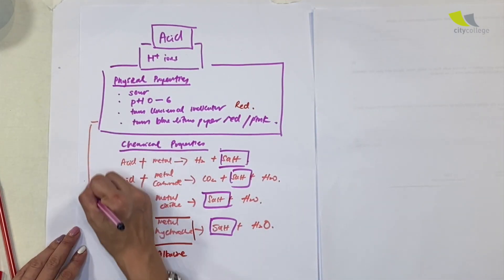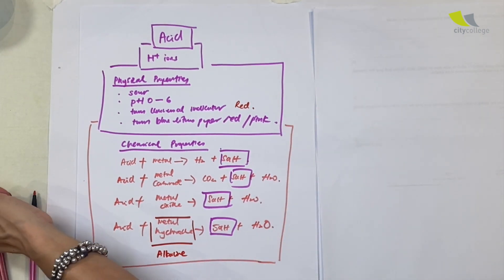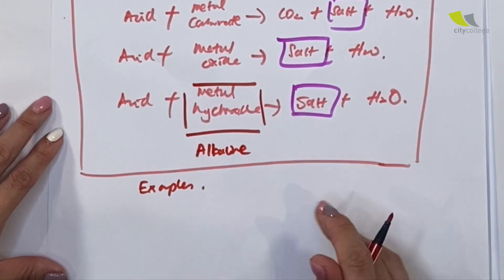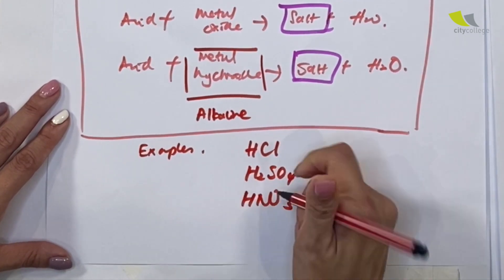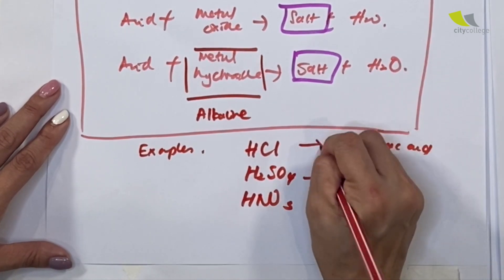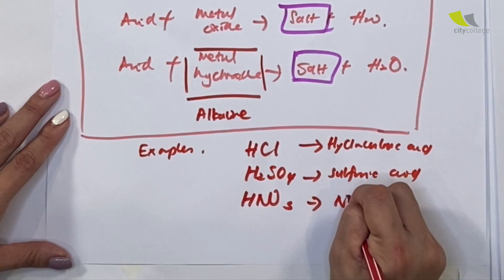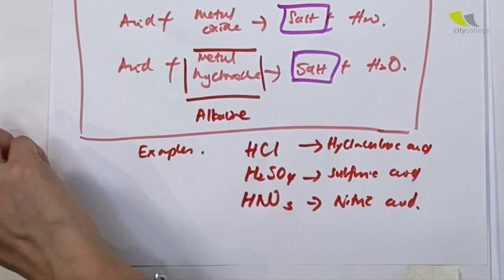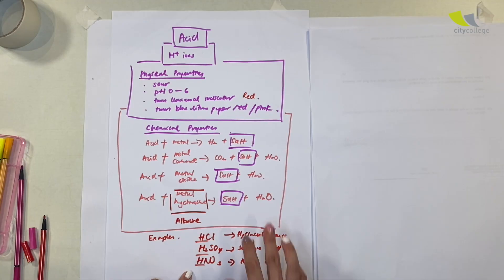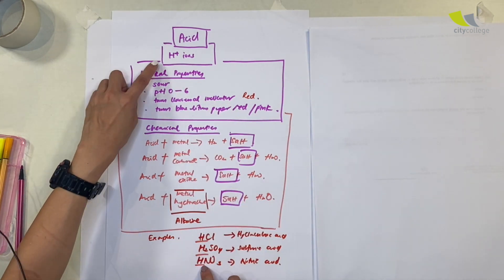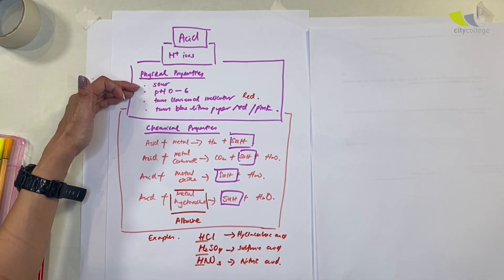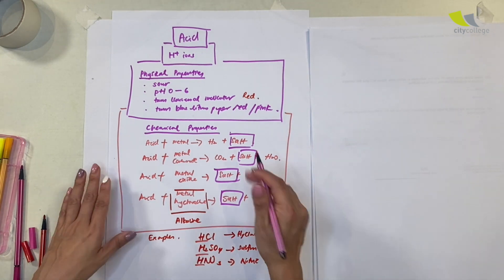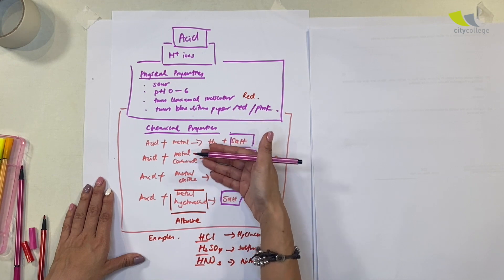Common examples of acids found in the lab are HCl (hydrochloric acid), H₂SO₄ (sulfuric acid), and HNO₃ (nitric acid). Notice that all of them have H⁺ ions in common — all acids give up H⁺ ions. They all taste sour, and the chemical properties range from reactions with some metals to metal carbonate.